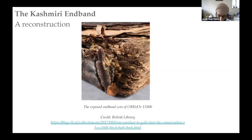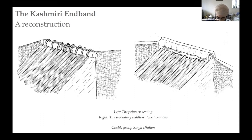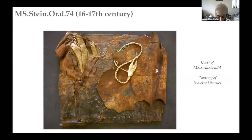As well as securing this wooden core, the primary sewing helps to attach a textile spine lining onto the backs of the gatherings. Whilst this primary sewing structure is found in many binding structures originating from the eastern Mediterranean, the secondary component is particularly distinct. Saddle stitching, used for this secondary component, is a technique used in northern European bindings of the 15th century. But the Kashmiri binders had a particular style of folding and creasing the leather to form a recognizable head cap. Its presence on a binding potentially dating to the 11th century suggests that by this period this binding structure was mature and well established.